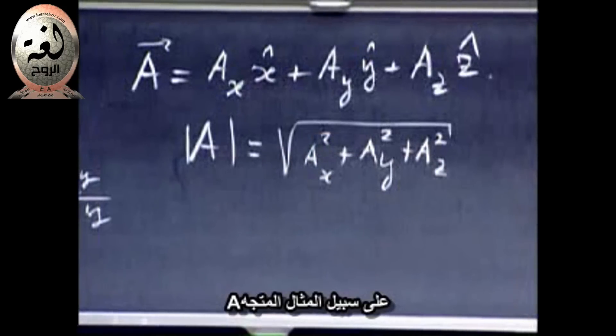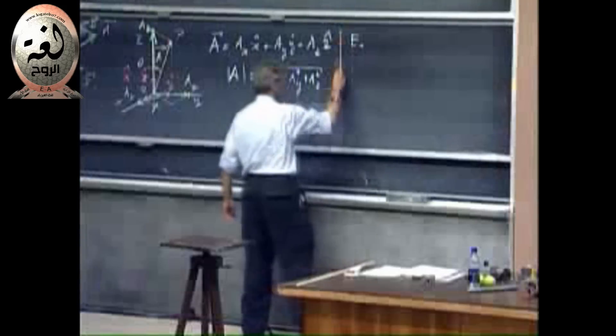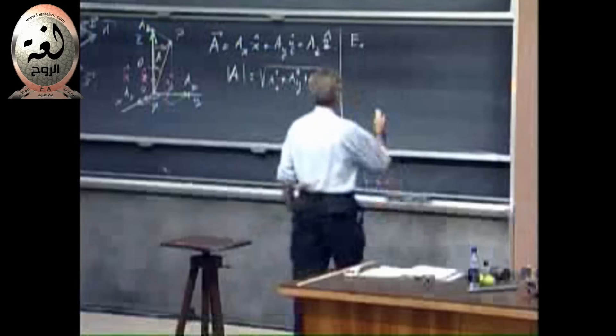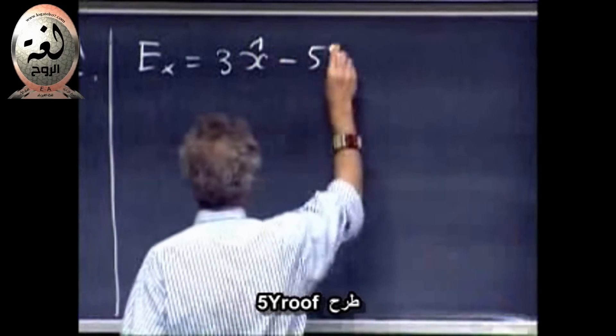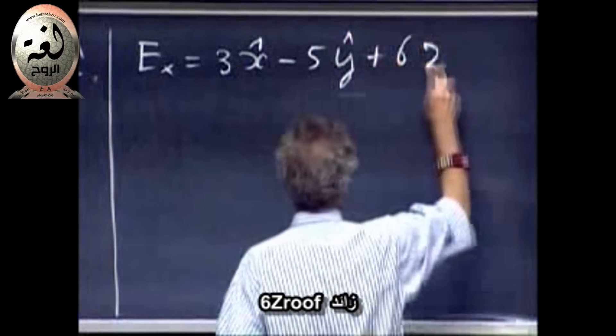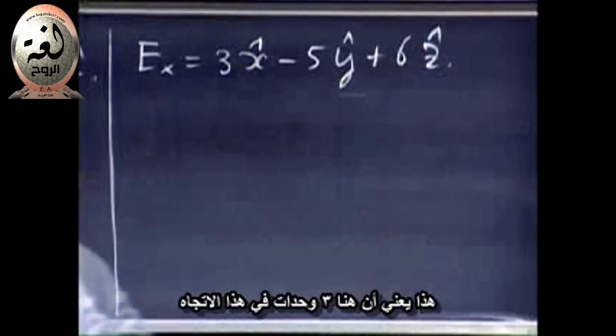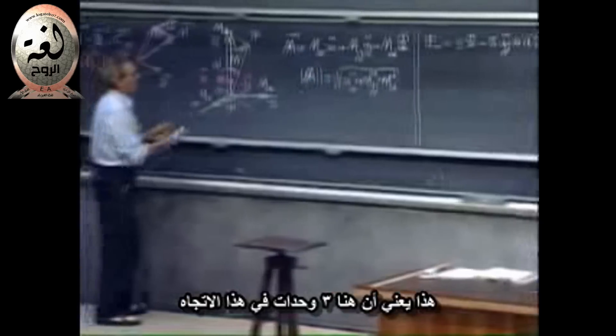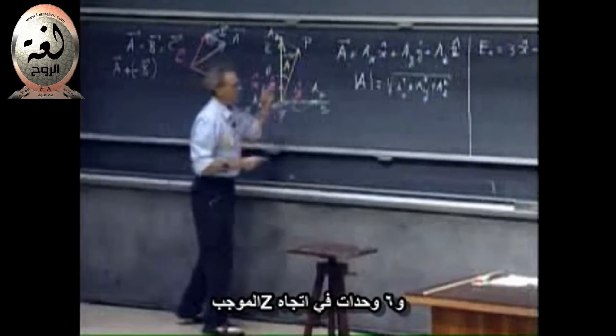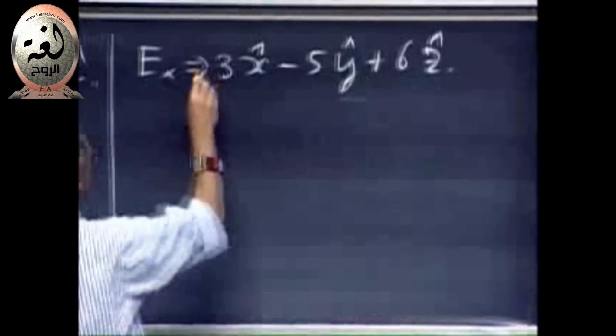And so we can take a simple example. For instance, I take a vector A. So this is just an example. You see this in action. And we call it 3x-roof minus 5y-roof plus 6z-roof. So that means that it's three units in this direction, five units in the minus y direction, and six in the plus z direction. That makes up a vector, and I call that vector A.